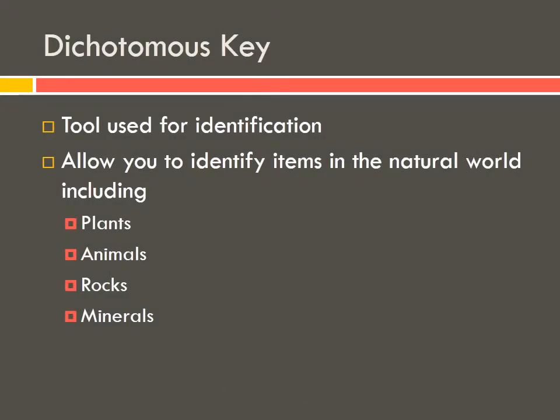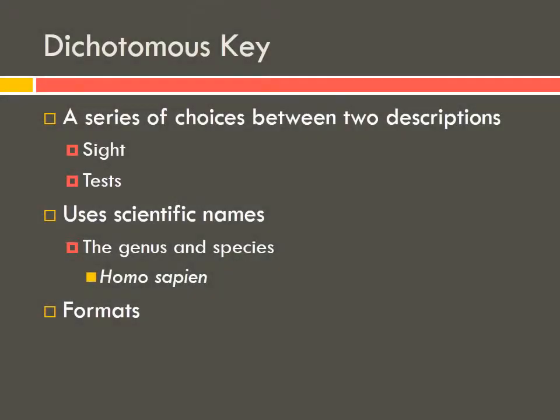This is one place where dichotomous keys can really come in and help us. Dichotomous keys are used to identify an unknown item — we can use them to figure out the scientific name of that item. A dichotomous key is really just a series of choices between two descriptions. If you're trying to figure out an unknown, you'll have to decide which of the two descriptions fits your unknown. Some choices can be made by just looking at the unknown; for others, you might have to perform a test.